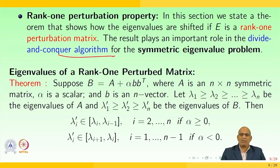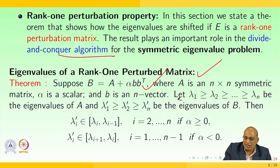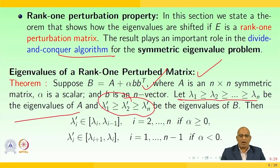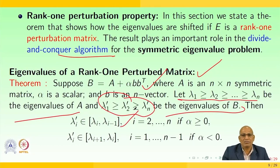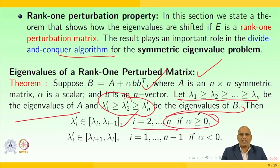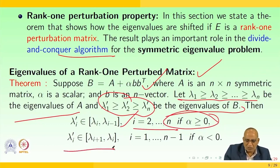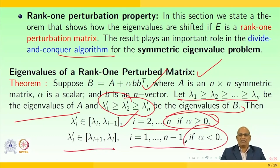Eigenvalues of a rank-1 perturbed matrix can be stated as follows. Suppose B equals A plus alpha times b times b transpose, where A is an n by n symmetric matrix, alpha is a scalar, and b is a vector. Assuming lambda 1 prime, lambda 2 prime, ..., are eigenvalues of matrix B, then lambda i prime belongs to the interval [lambda i, lambda i+1] for i equal to 1 to n minus 1 if alpha is greater than or equal to 0, and lambda i prime belongs to [lambda i+1, lambda i] for i equal to 1 to n minus 1 if alpha is less than 0.